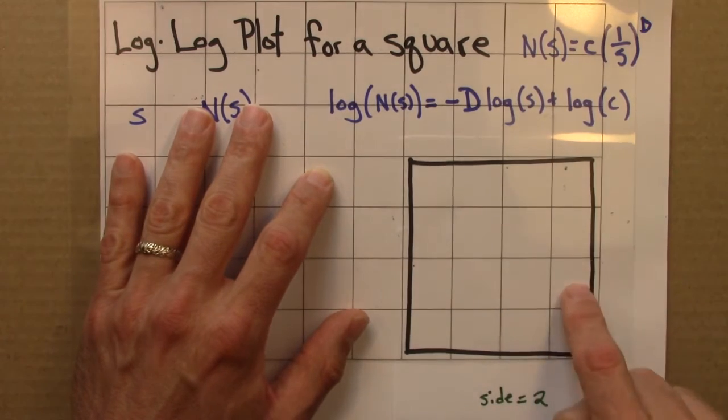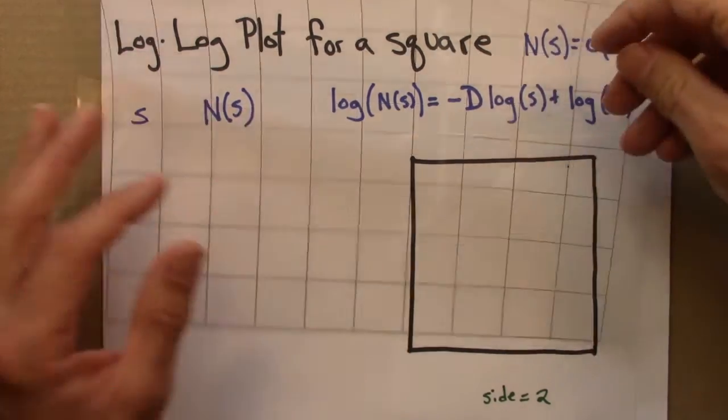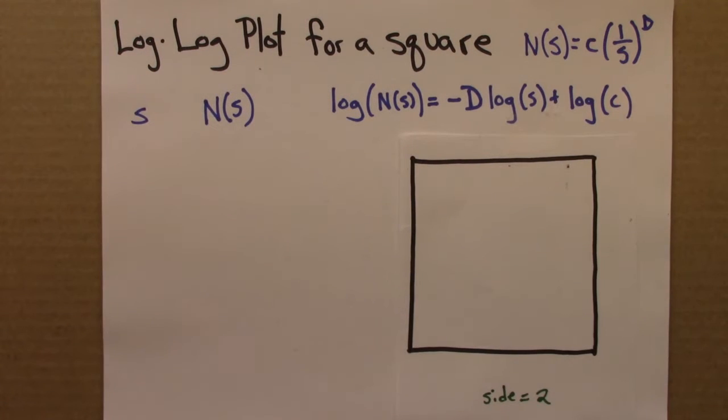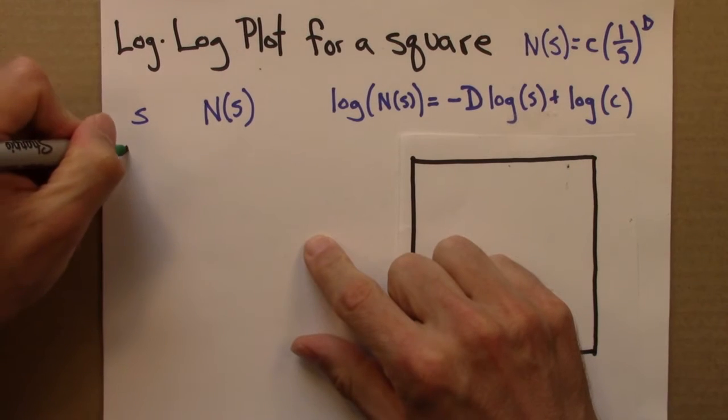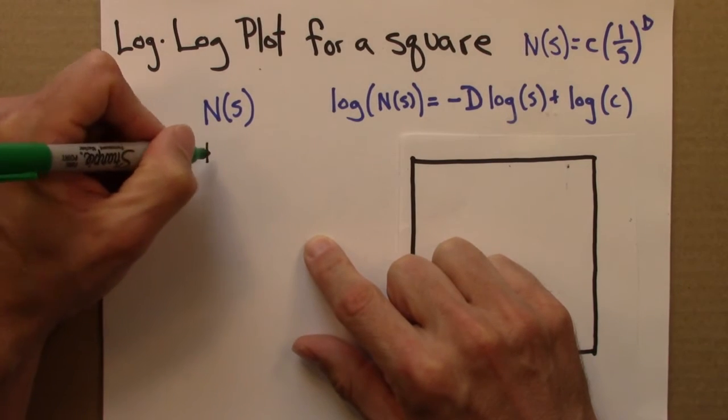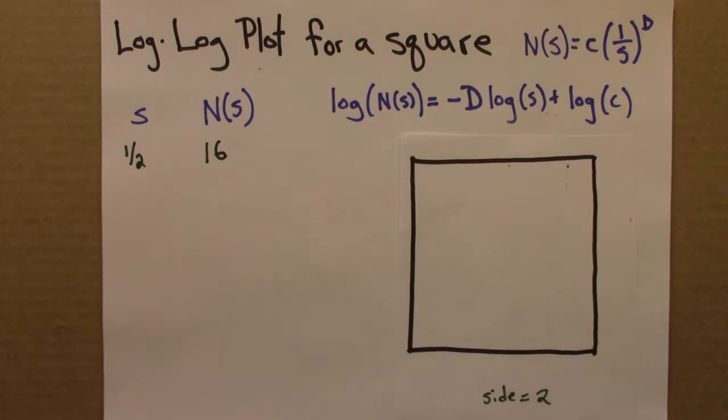And we can count boxes: 1, 2, 3, 4, 1, 2, 3, 4. 4 times 4 is 16. So we see that if s is a half, n of s is 16.